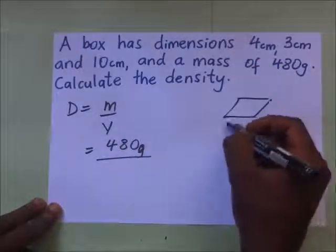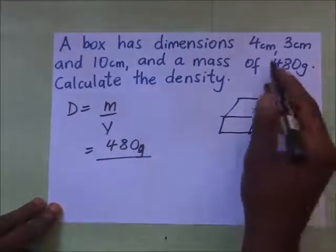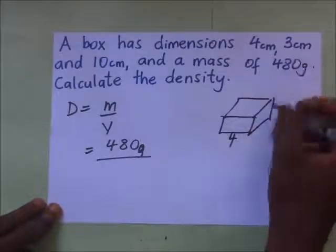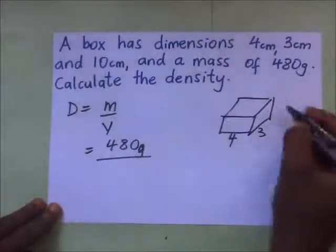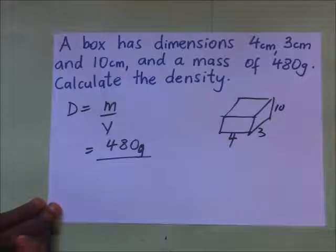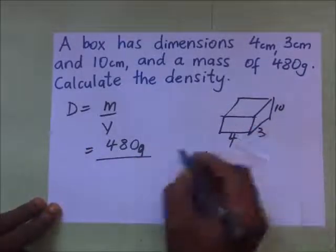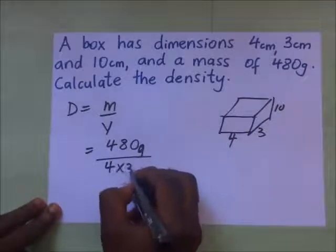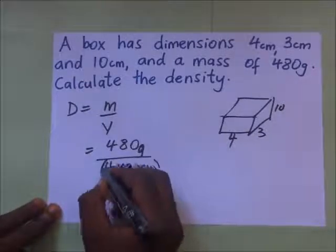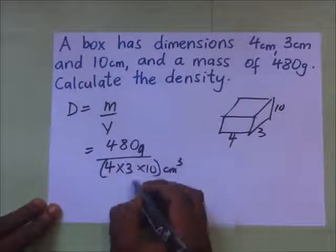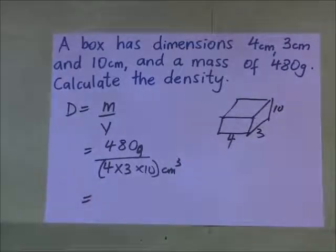They've given us the dimensions of the box: 4 centimeters by 3 centimeters by 10 centimeters—length, width, and height. So the volume is length times width times height, which is 4 times 3 times 10, giving us centimeters cubed. So our answer is going to be in grams per centimeters cubed.